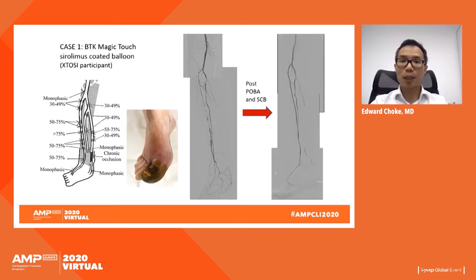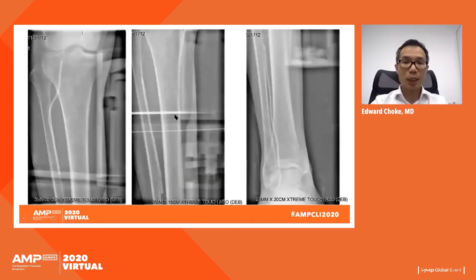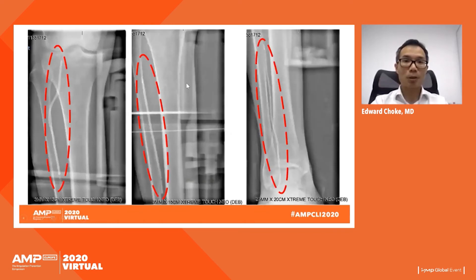After successful plain old balloon angioplasty, I applied the sirolimus-coated balloon to the entire length of the anterior tibial artery. Sirolimus-coated balloon was applied to the proximal, mid, and distal anterior tibial artery, encroaching slightly into the dorsalis pedis.